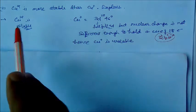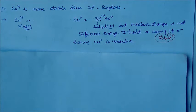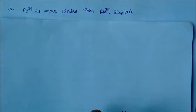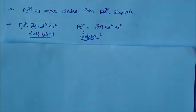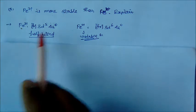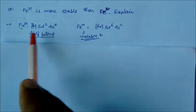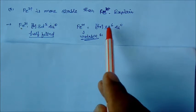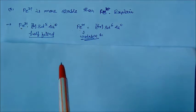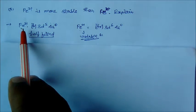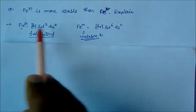Fe3+ is more stable than Fe2+. Here things are reversed. If you go through the electronic configuration, Fe3+ has 3d5 4s0 argon, so this is half-filled. But if you take Fe2+, this is 3d6 4s0. In case of ferrous, ferrous is unstable, but in case of ferric this is half-filled, so this is more stable.